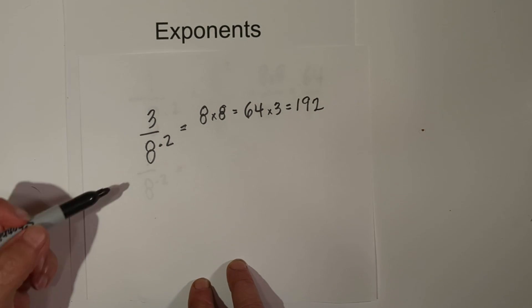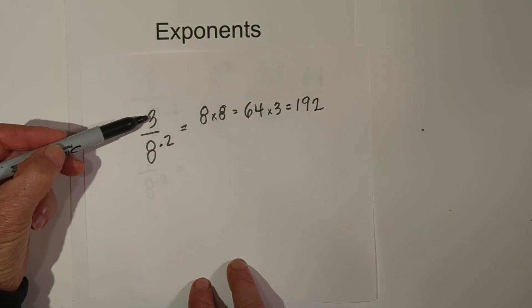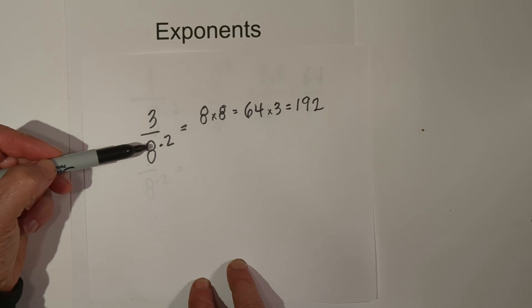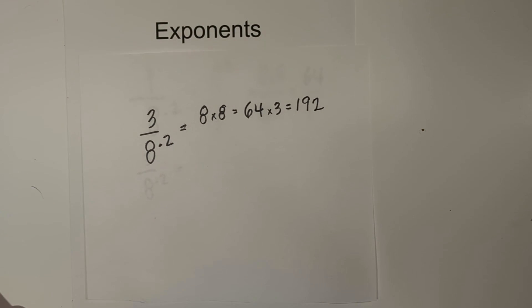So again, you don't get rid of the 3. You don't move it to the bottom. You keep it where it is and then multiply it times the reciprocal of 8 to the negative 2. Thanks for watching and remember, kindness multiplies kindness.